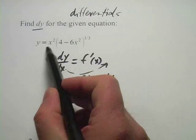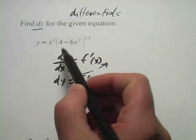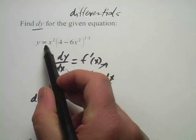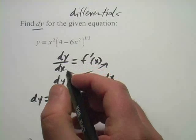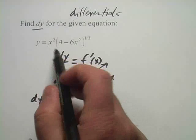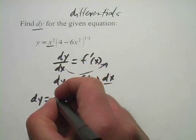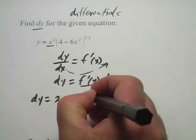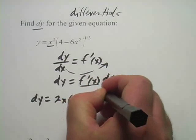This looks a little bit complicated. We're going to need to use the product rule here. So dy equals the derivative of this. I'll take the derivative of the first thing, which is x², so 2x, times the second thing, which is (4-6x²)^(1/3),